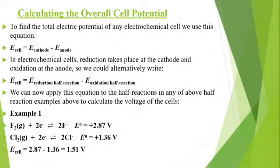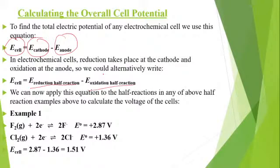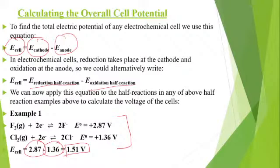Calculating the overall redox potential: the cell potential is cathode minus anode. We take the reduction half-cell reaction minus the oxidation half-cell reaction to get the total overall cell potential. For example, in a cell with fluorine and chlorine as two electrodes, the calculation is 2.87 minus 1.36, giving an overall cell potential of 1.51 V.